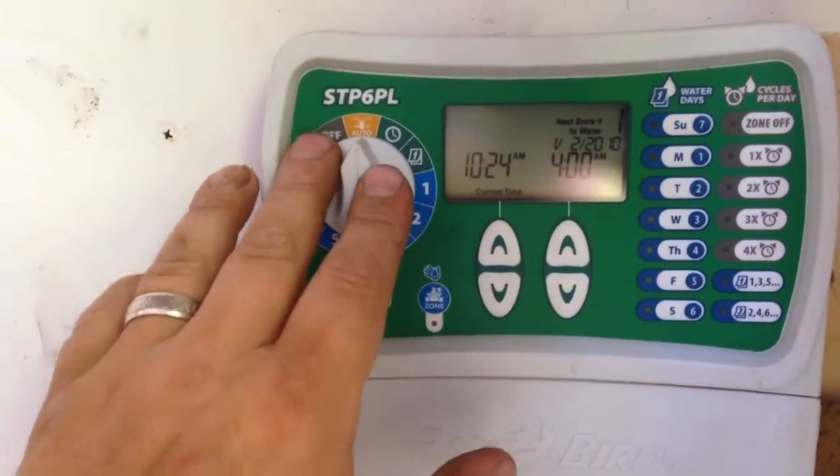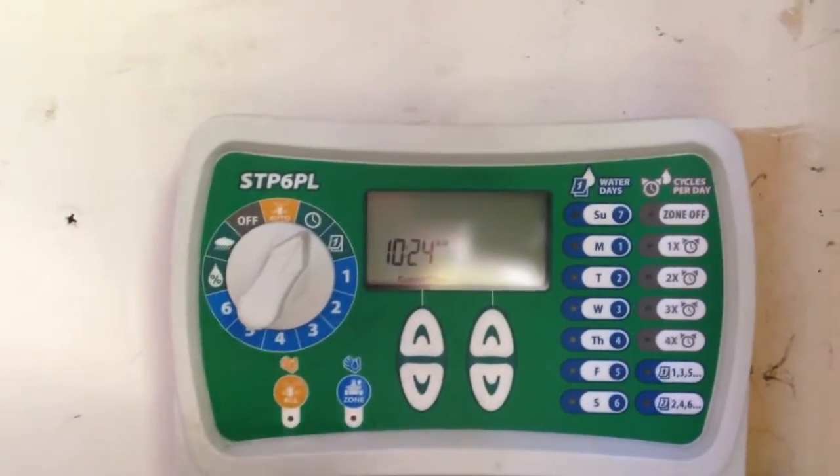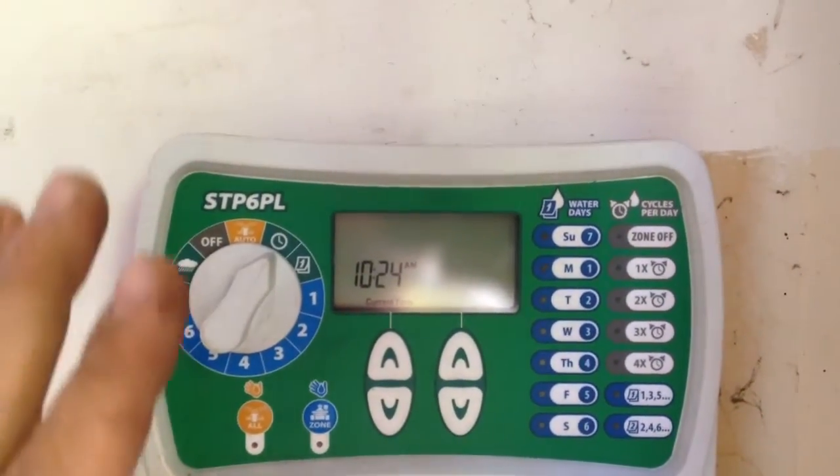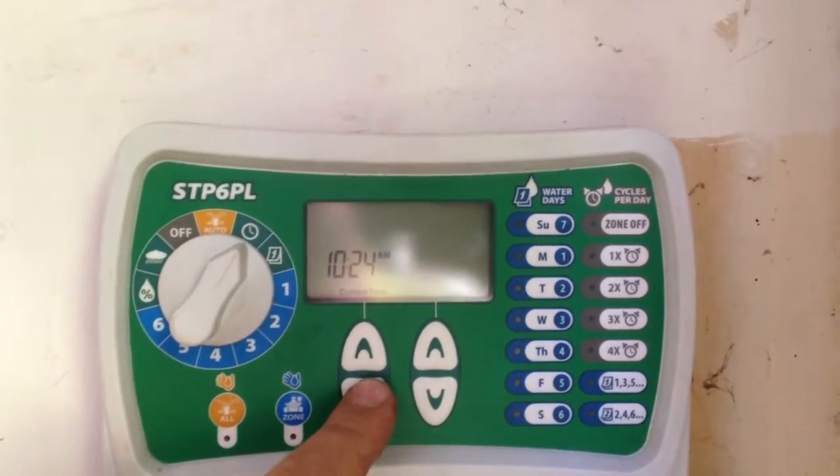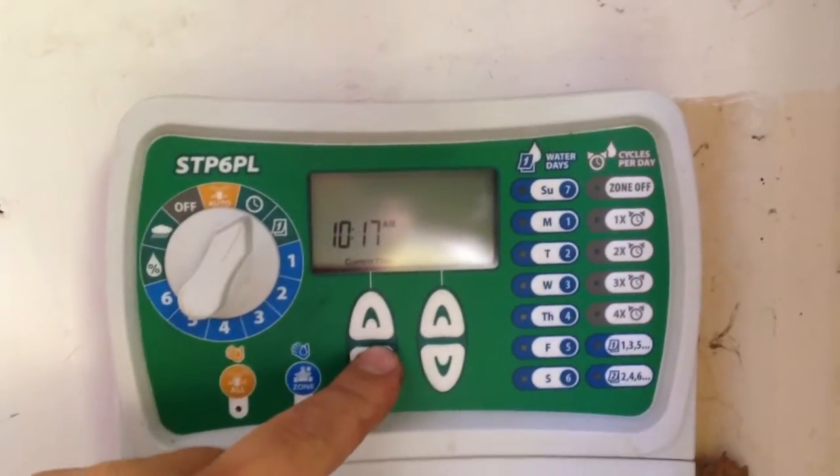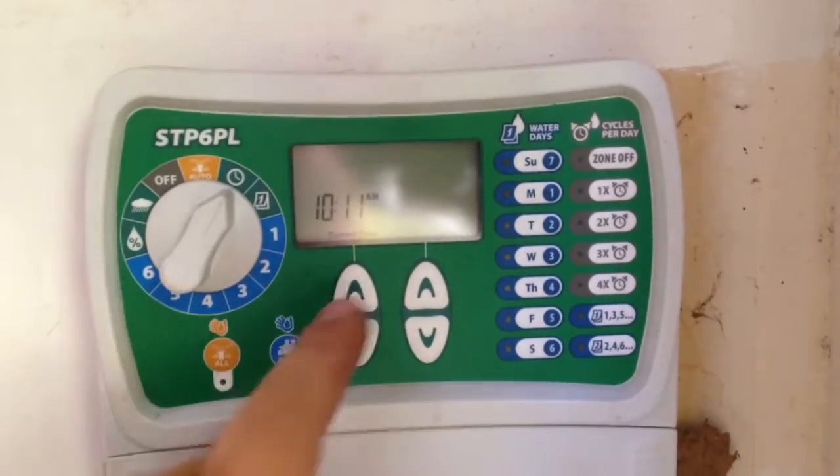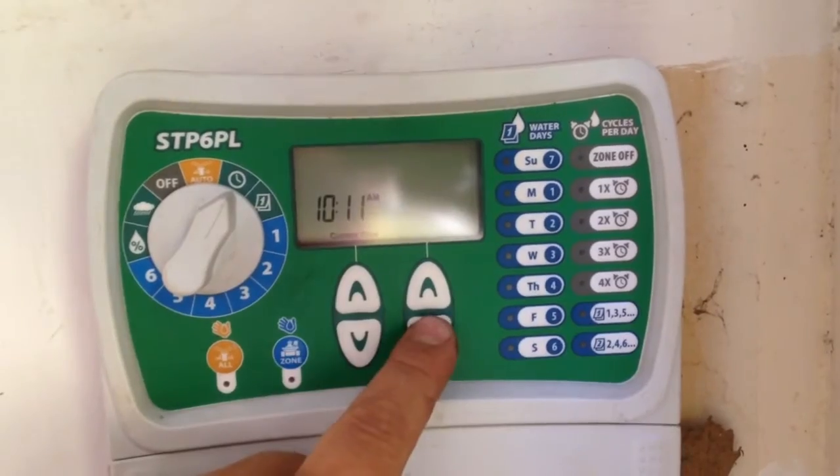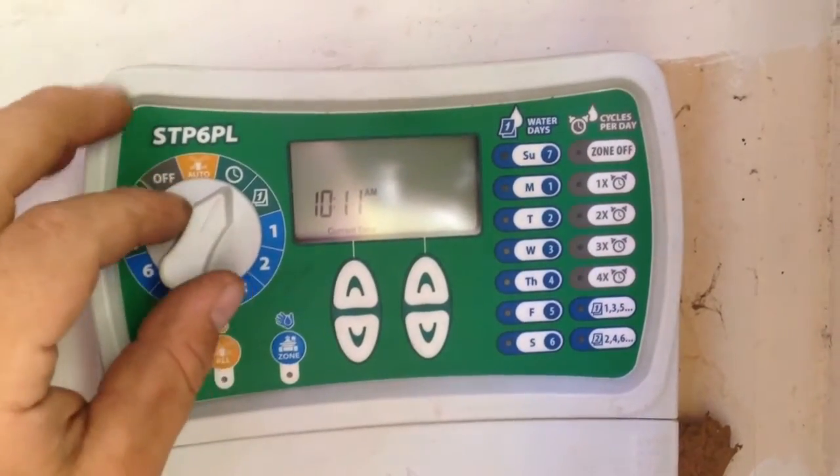First setting, the auto-run, that's going to just give you your heads-up display and tell you when it's running. We're going to go back to that and tell you everything that it's going. The set time, right now it is 10-11 a.m. And the up and down arrows will change the time, both up and down arrows will change the time for the time setting.